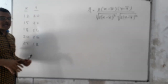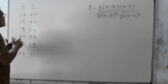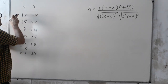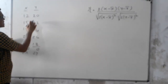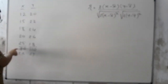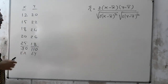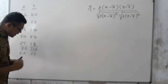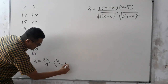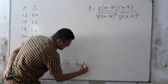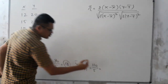First of all, when you calculate the correlation, find the total of ΣX and ΣY. The total of X is 90 and the total of Y is 110. Then find X̄ and Ȳ. X̄ = ΣX upon N = 90 upon 5 = 18. Then find Ȳ — the number of observations is 5 — so Ȳ = 110 upon 5 = 22.